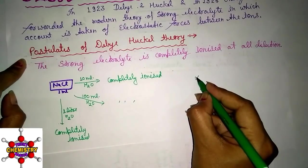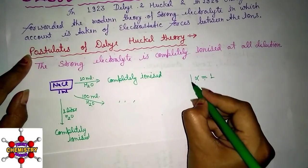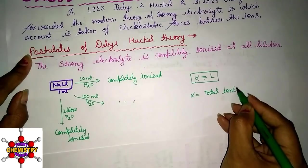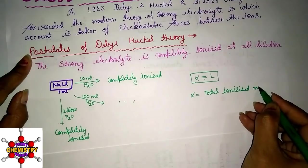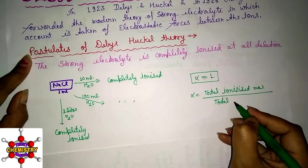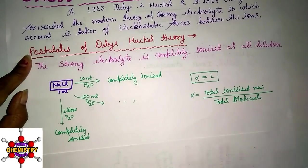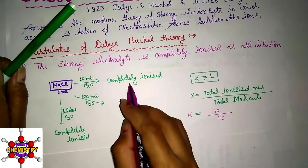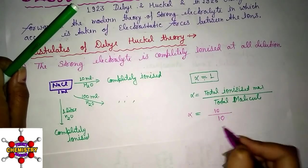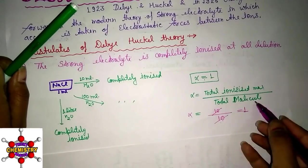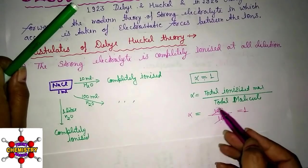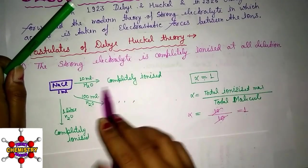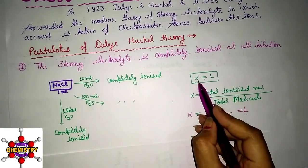The degree of dissociation alpha equals the total ionized molecules divided by the total molecules before ionization. If we take 10 molecules and all 10 are ionized, alpha = 10/10 = 1. If we take 20 molecules and all 20 are ionized, alpha = 20/20 = 1. So for a strong electrolyte, alpha equals 1 at all dilutions.